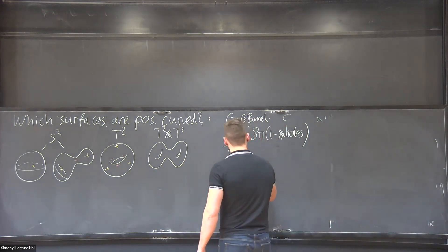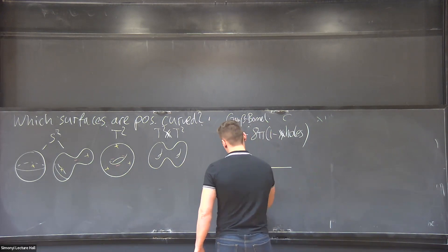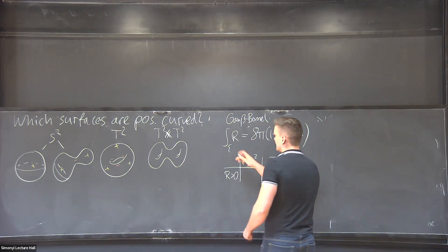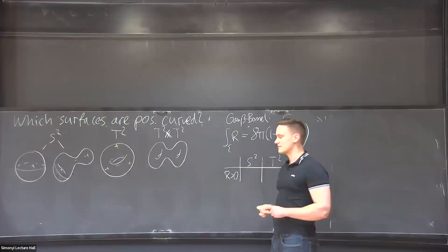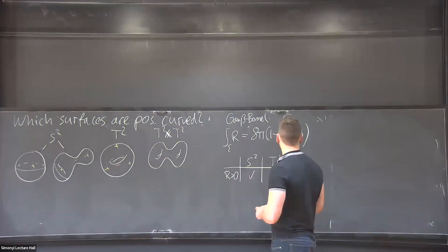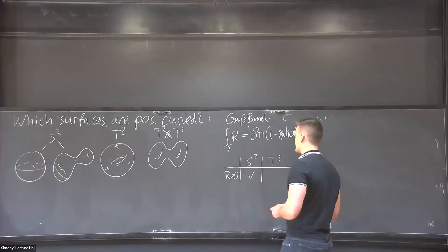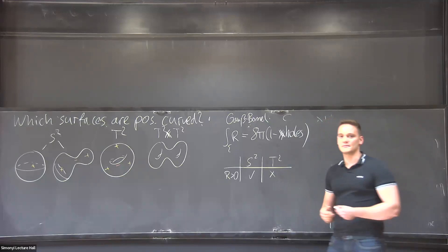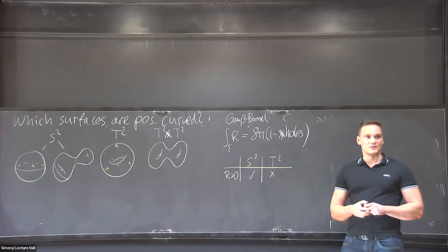So we got in dimension two, this following table. We ask ourselves can we get positive curvature, and say we take the sphere and the torus, and for other surfaces that will look very similar. For the sphere, it will be possible to have positive curvature, but then for the torus, as we've just seen from the Gauss-Bonnet, it will be impossible to have positive curvature.